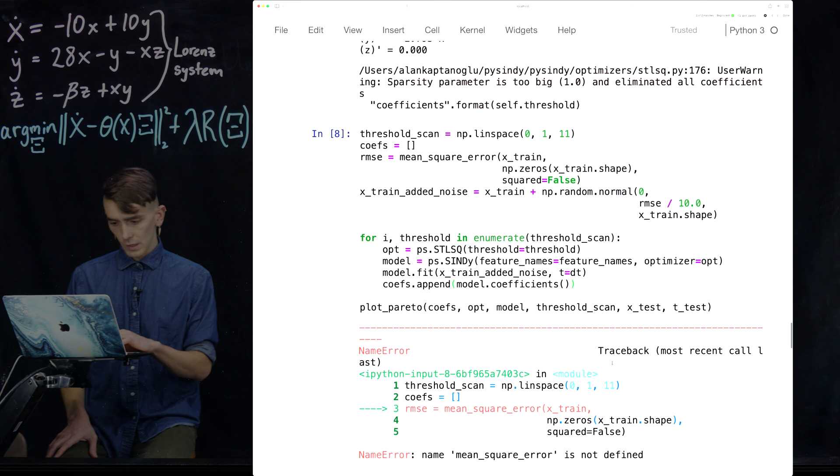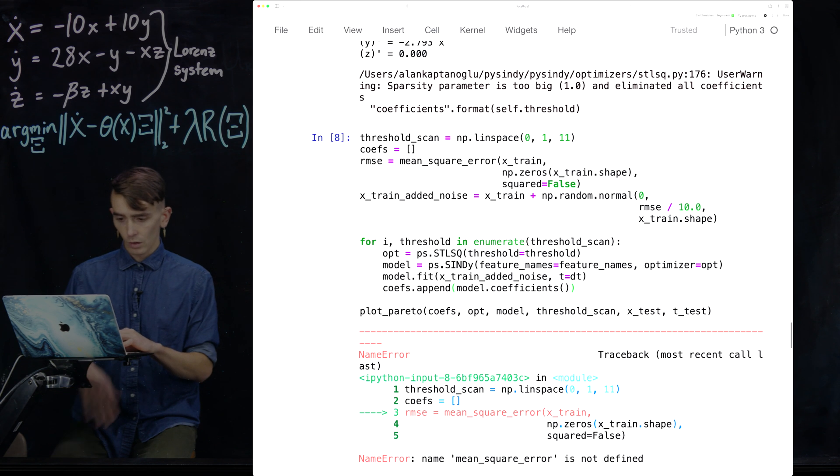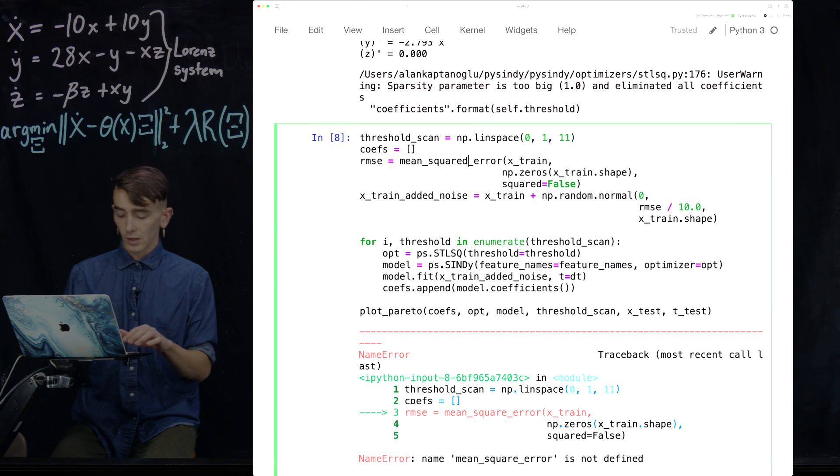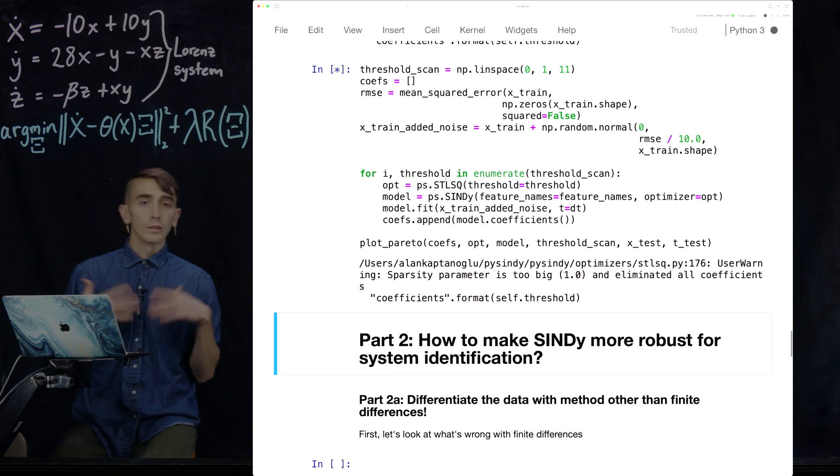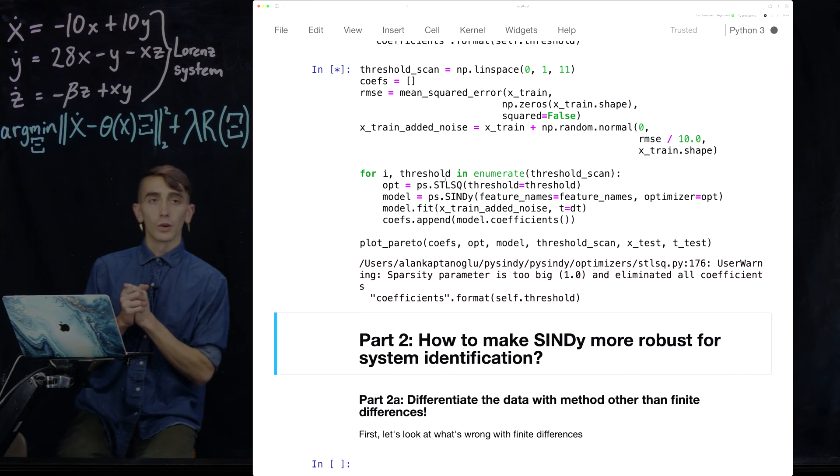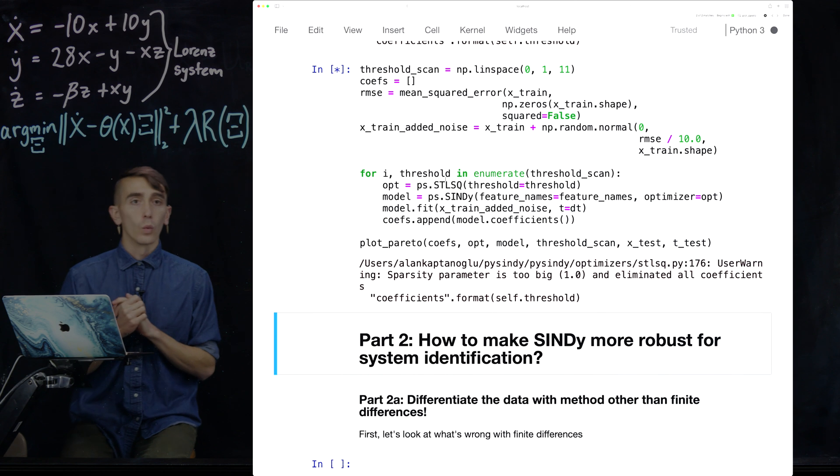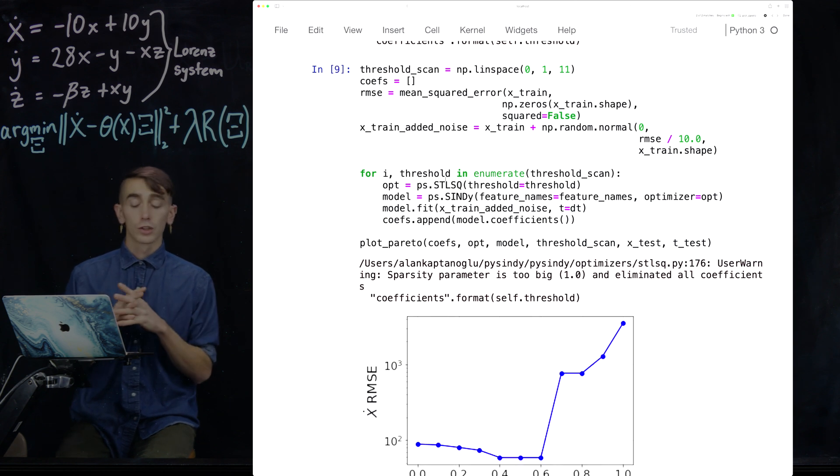I think it's mean squared error. You get to see me make mistakes too. Great. Okay. So now it's running and it'll generate some curves in a second. And we're going to walk through those to figure out how do you actually choose your value.